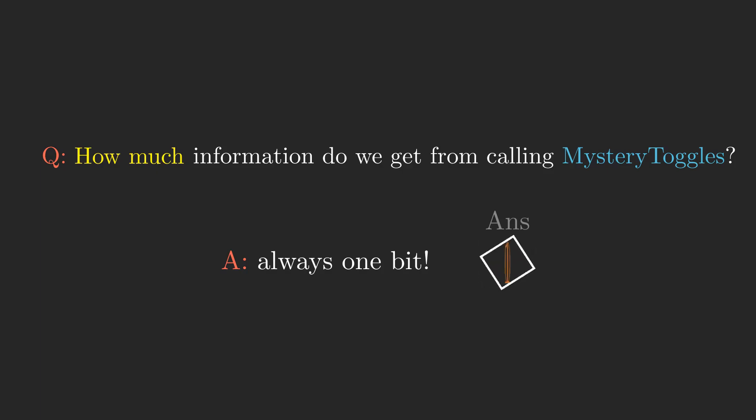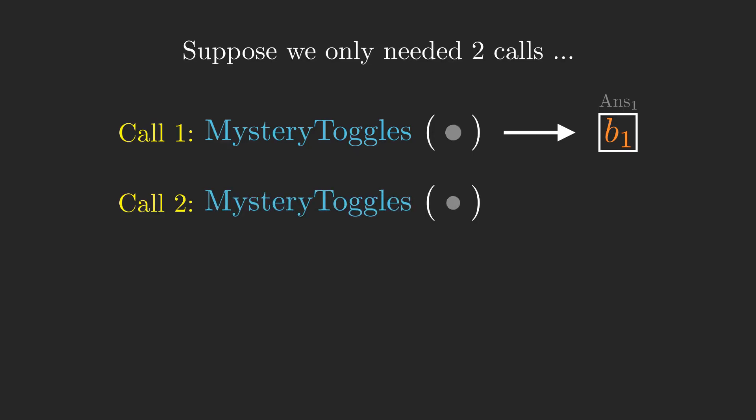Now, suppose that there is an algorithm which correctly decides which out of the eight possibilities is the true mystery toggles with only two calls to mystery toggles. In that case, we would get a pair of answer bits, b1 and b2, as the output of mystery toggles for those two calls.